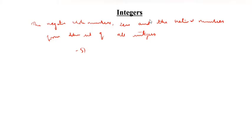What are the integers? Minus 5, minus 4, minus 3, minus 2, minus 1, 0, 1, 2, 3, and so on.